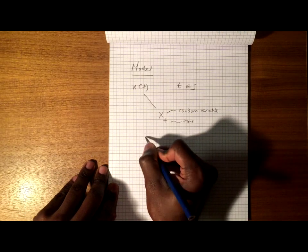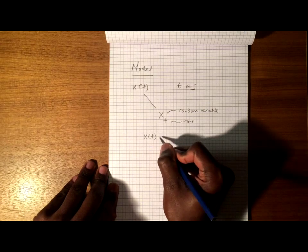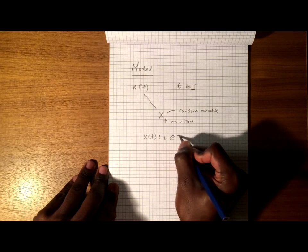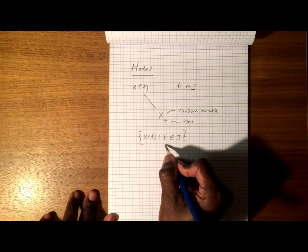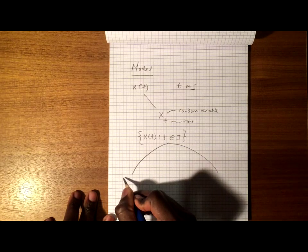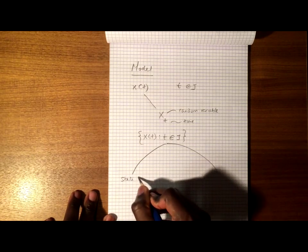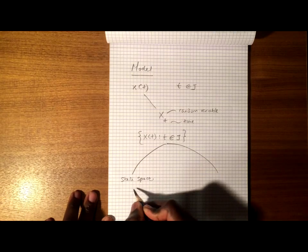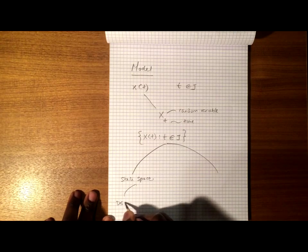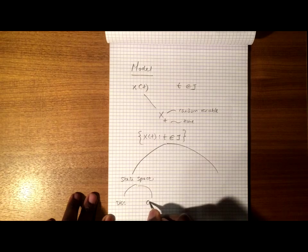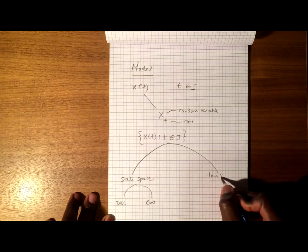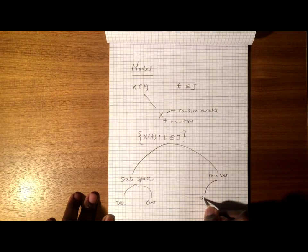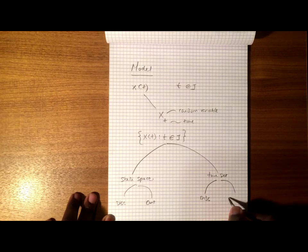So the stochastic process xt such that t belongs to the set j, and I can put these in parentheses, can either have a state space that is discrete or continuous and a time set that is discrete or continuous.